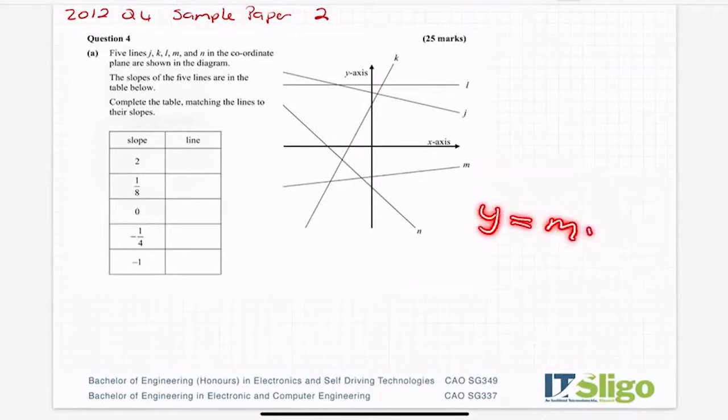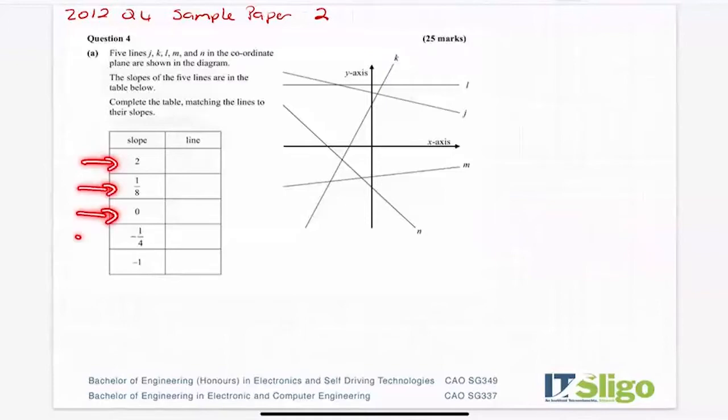There's another formula, y equals mx plus c, and you can get slope from that. I can't use that because they haven't given me the equations of those lines. All they have given me is figures for slopes and some random lines drawn on a grid.